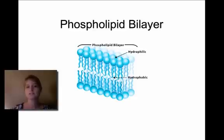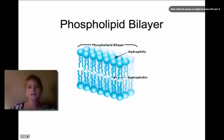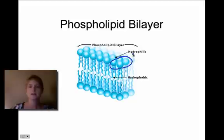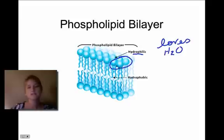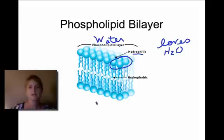The first part we're going to look at is the phospholipid bilayer, which is a really important part of the cell. It's made up of two parts. The first is the hydrophilic heads — hydrophilic means that it loves water, kind of like us in the summertime loving the water in Arizona. These parts of the bilayer love to be around water, which is good because both the outside and inside of the cell are water environments, so those hydrophilic heads are exposed to water all the time.